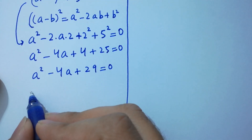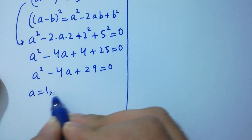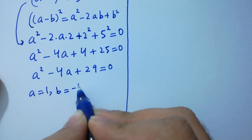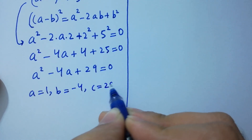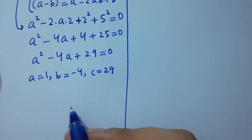For this quadratic equation, a is 1, b is minus 4, c is 29. We apply the quadratic formula.